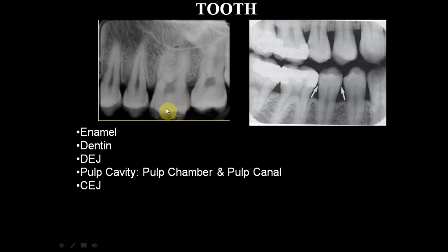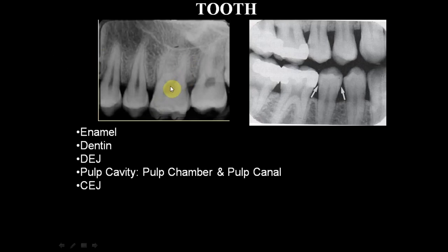Dentin is around 70% mineralized, which is why you can differentiate it from enamel on a radiograph. The pulp is a soft tissue carrying blood vessels and nerve innervations, so you see radiolucency there. The bulk canal space, radicular pulp, and coronal pulp can all be identified.